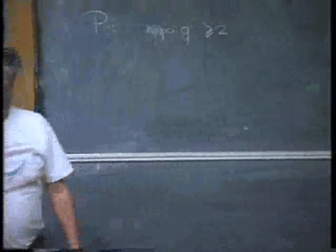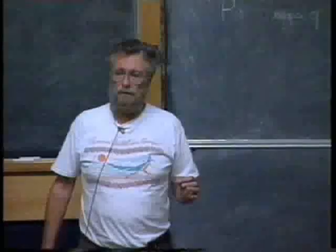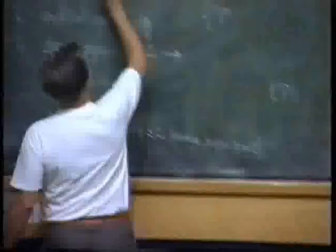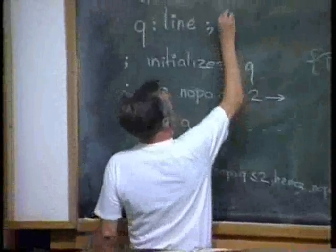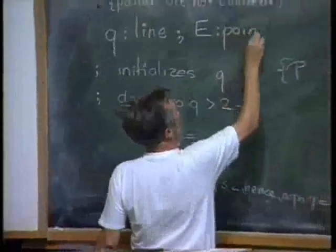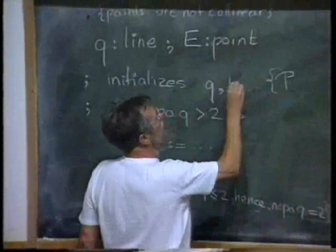So my proposal is to take that into account by introducing a variable of type point. Variable E will be of type point. E will also be initialized.